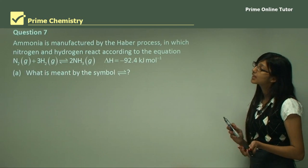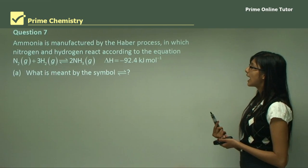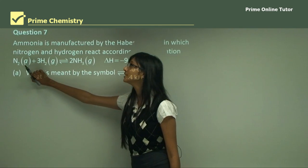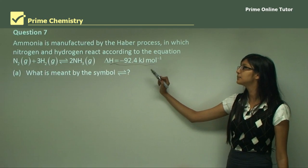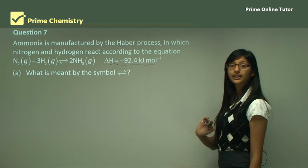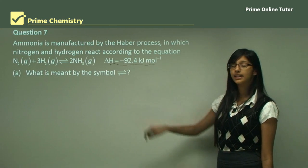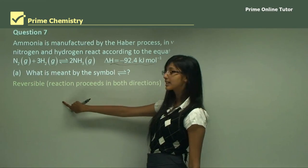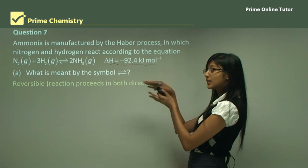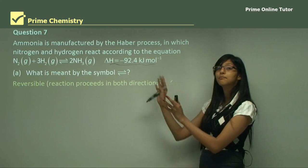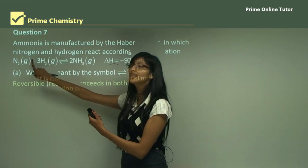Question seven states that ammonia is manufactured by the Haber process, in which nitrogen and hydrogen react according to the equation: nitrogen plus three molecules of hydrogen forms two molecules of ammonia. The negative enthalpy value confirms it is an exothermic process. Part A asks what is meant by the reversible arrow symbol — it means the reaction proceeds in both directions: the forward reaction forms ammonia, and the backward reaction means ammonia dissociates to reform nitrogen and hydrogen molecules.